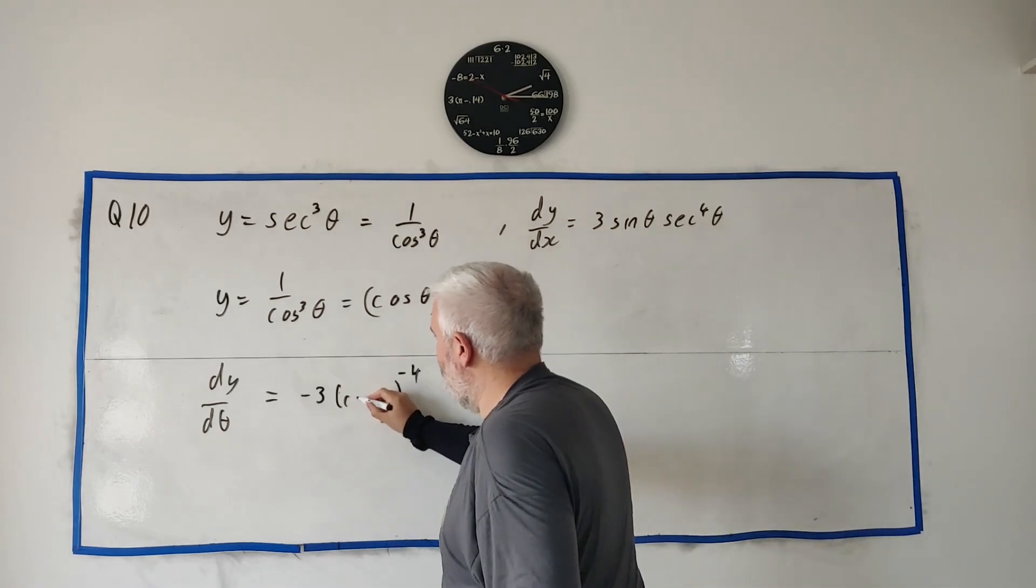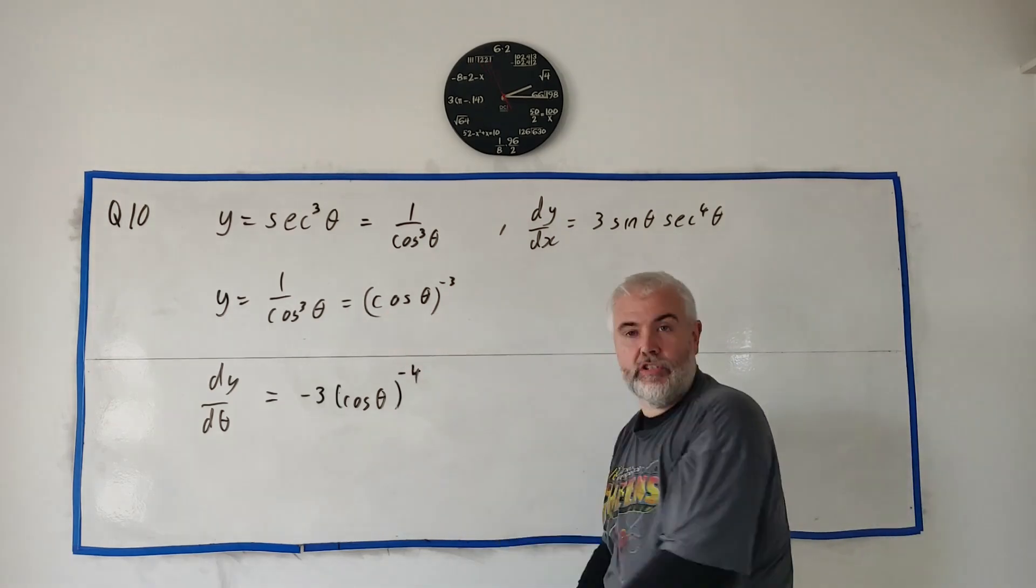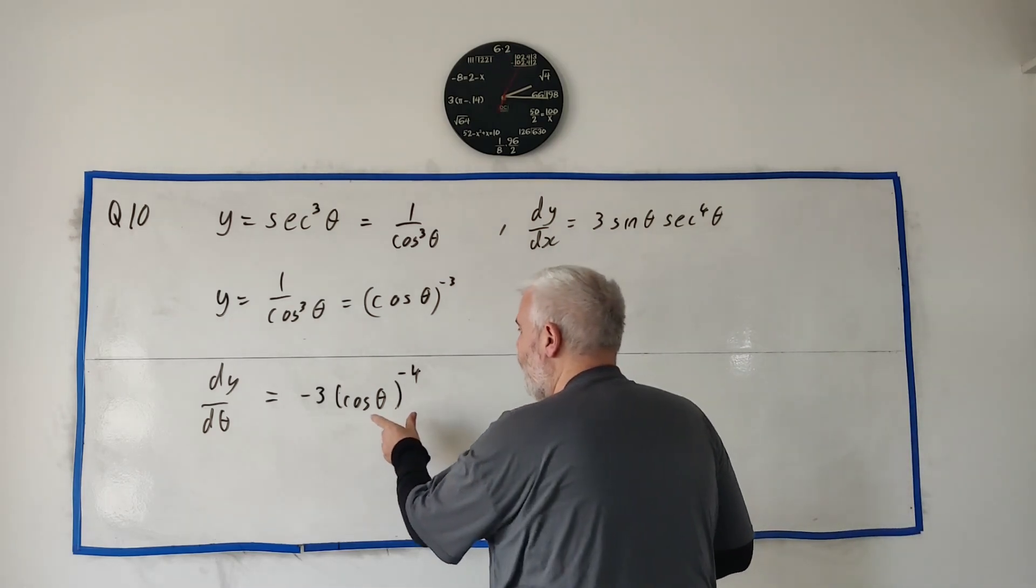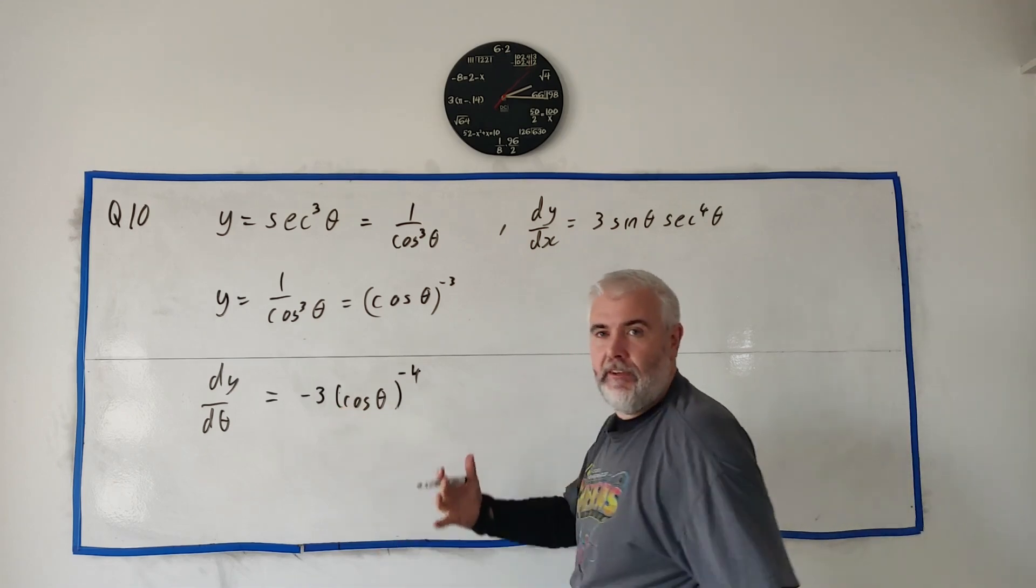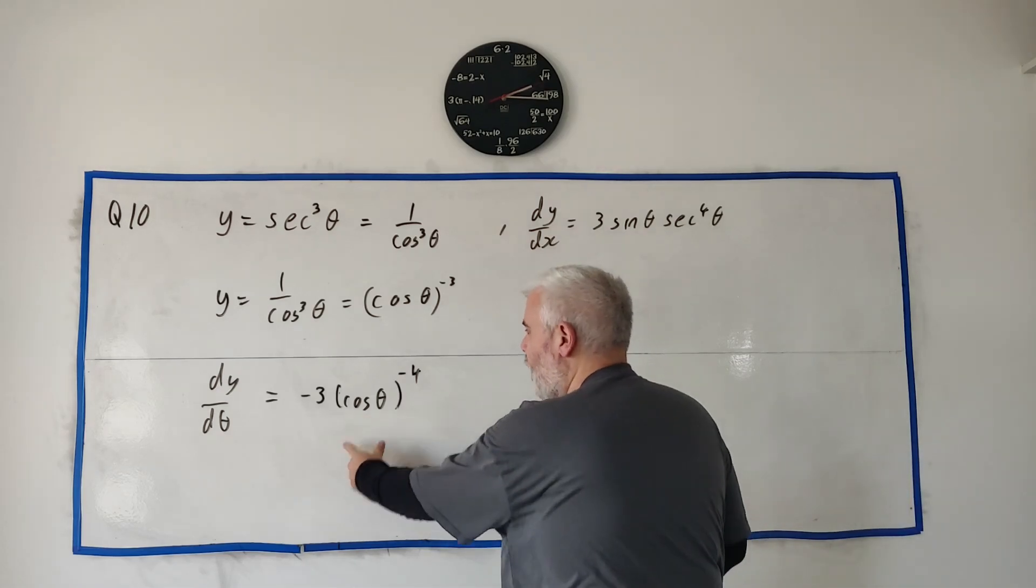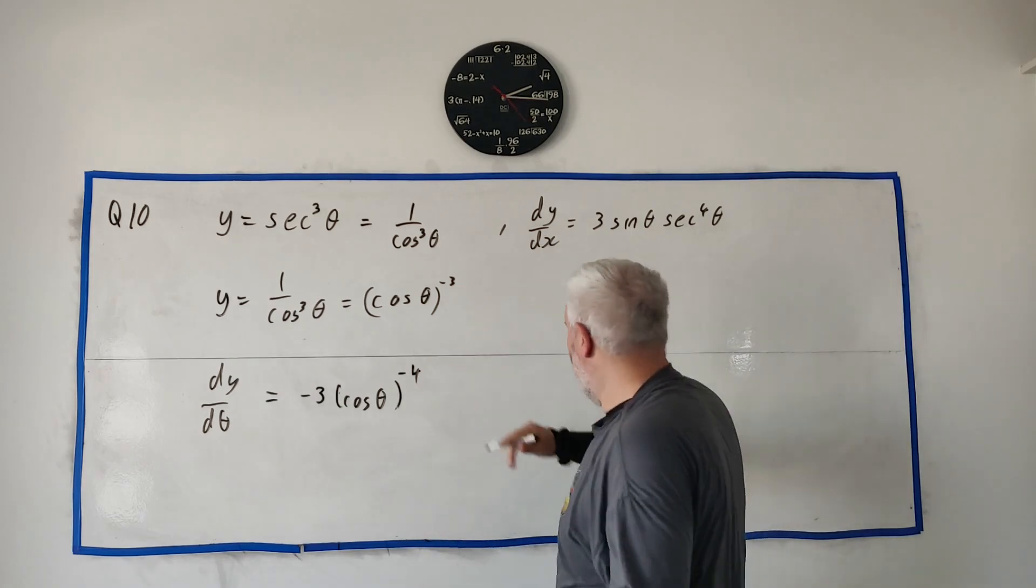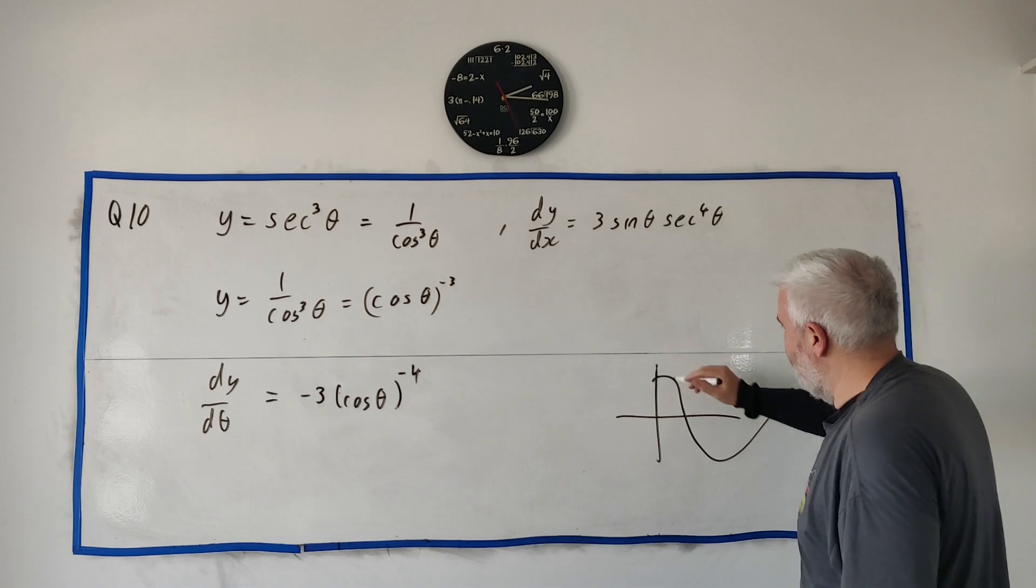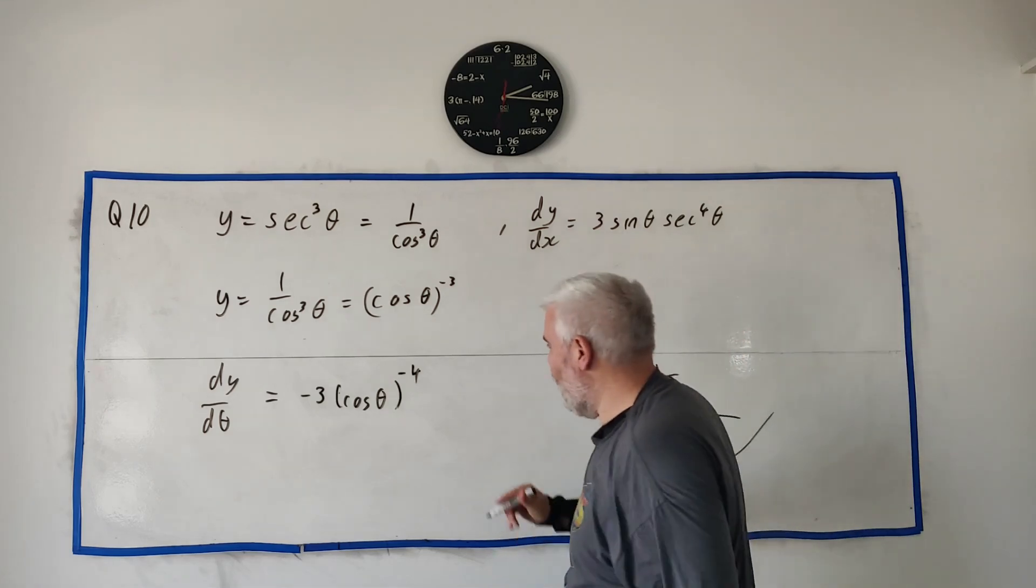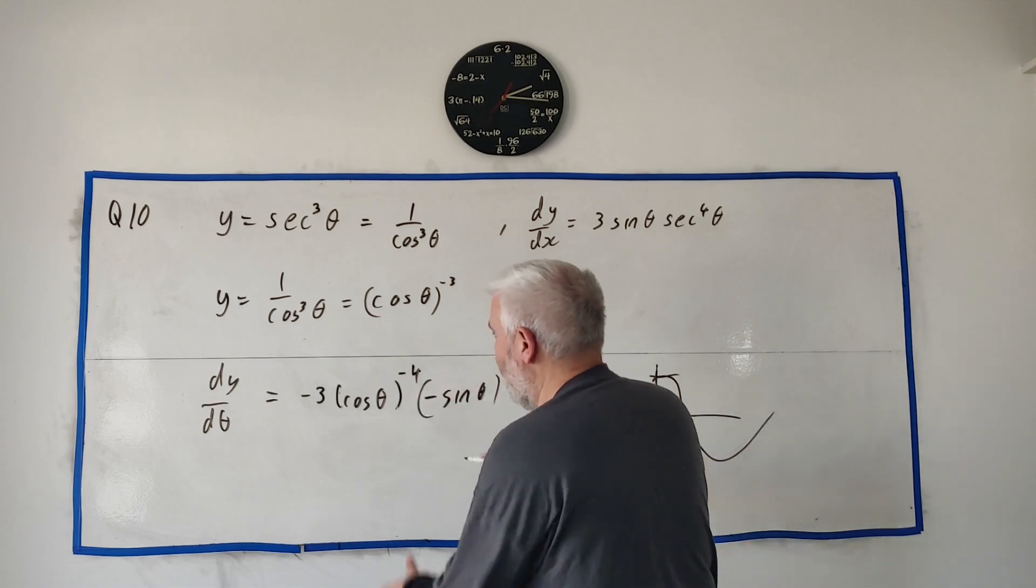I'll just put in cosine theta for this. But we're not allowed to pretend this is just x unless we fix that with the chain rule. We differentiate cosine theta and multiply it. The derivative of cosine theta is minus sine theta, and we multiply that.